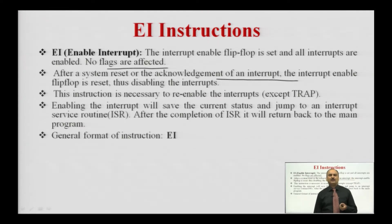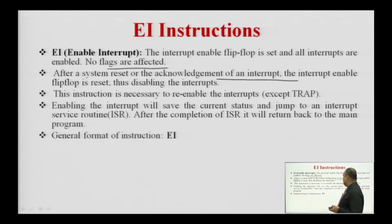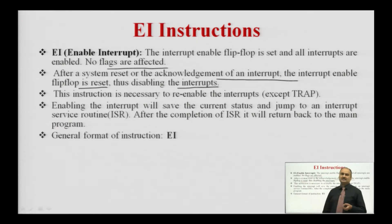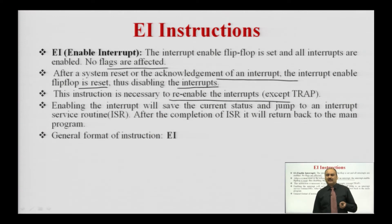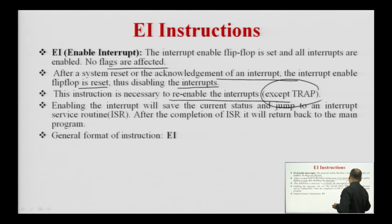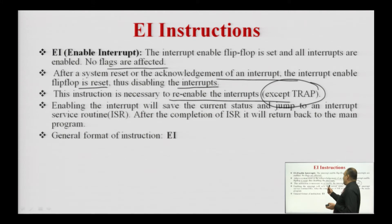Whenever the reset signal is applied to the 8085-based system, all interrupt enable flip-flops are reset, thus disabling all interrupts. The EI instruction is necessary to re-enable the interrupts. Whenever we use the EI instruction, it re-enables the interrupts that were disabled when the reset button was pressed — except TRAP, because TRAP is a non-maskable interrupt which cannot be enabled or disabled by any instruction. So EI re-enables RST7.5, RST6.5, RST5.5, and INTR.